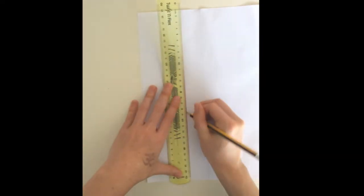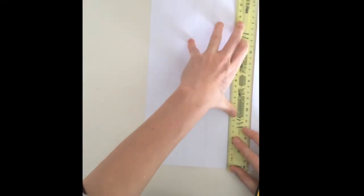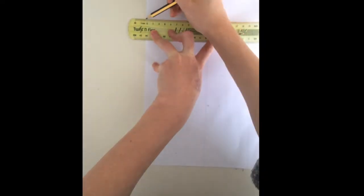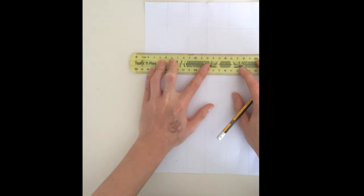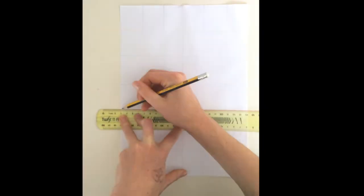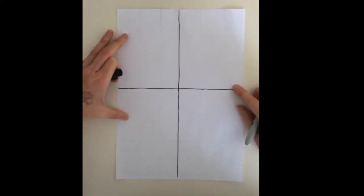Once you have your paper divided into fours, you're going to divide each part into the rule of threes. So using two horizontal lines and two vertical lines, or lines up and down and lines across, to divide each part into nine equal rectangles.